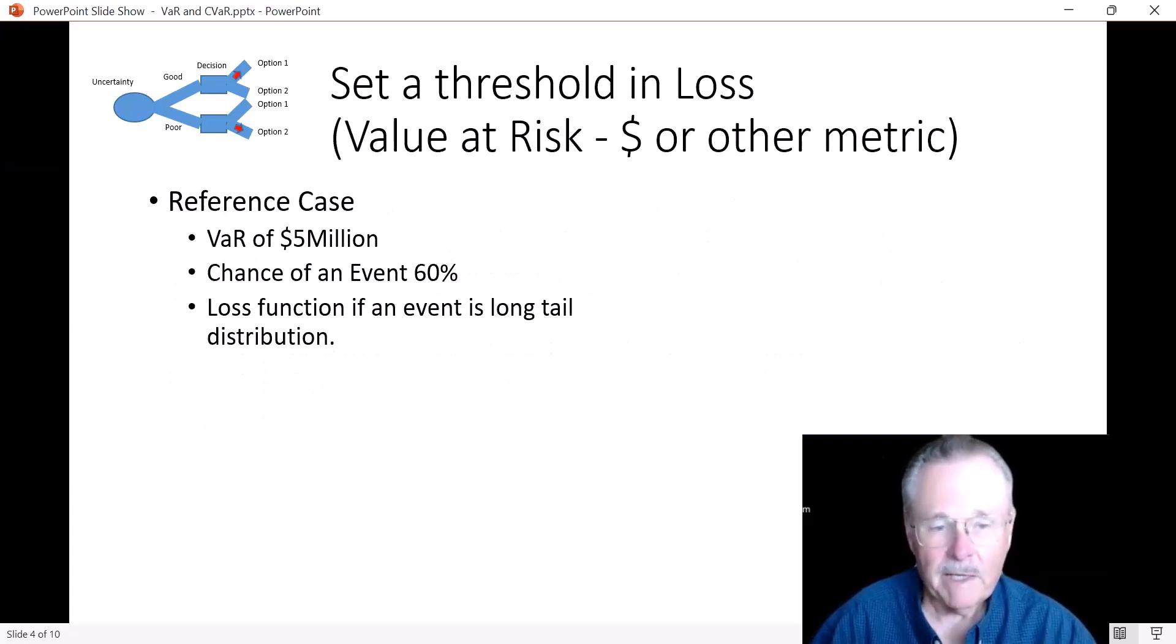Let's think about a case where we want to calculate a value at risk, which can be measured in dollars or in other metrics. Let's assume we're going to measure in dollars and we have a VaR of $5 million. And a chance of an event is 60%. The loss function, if an event occurs, is a long tail.